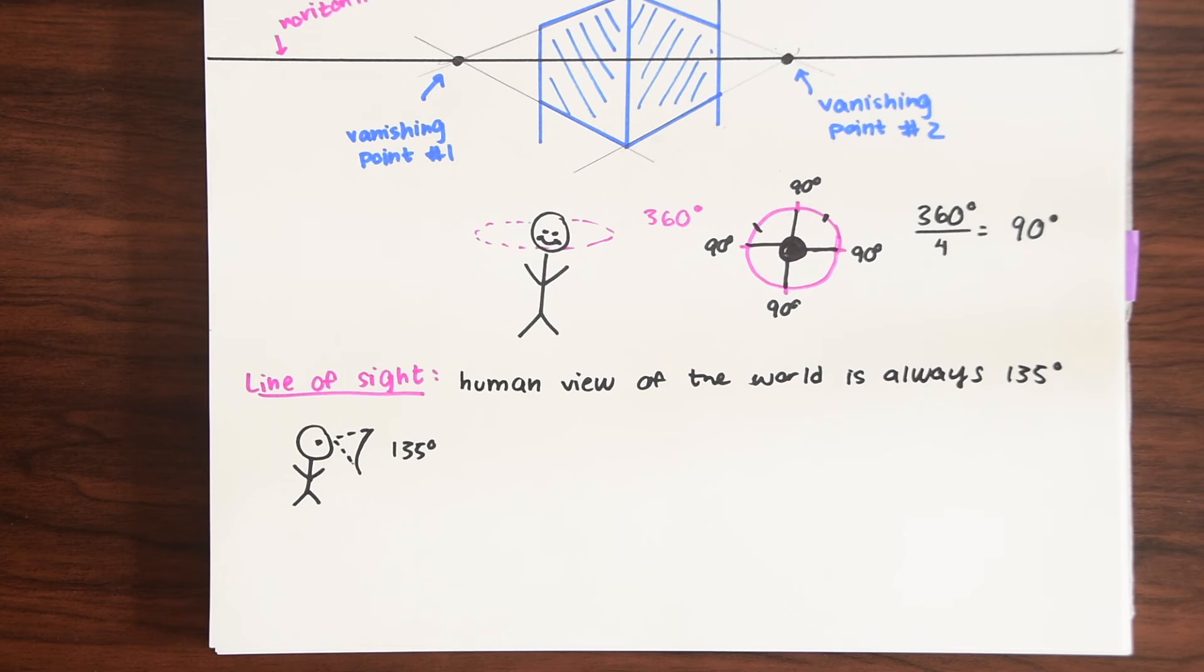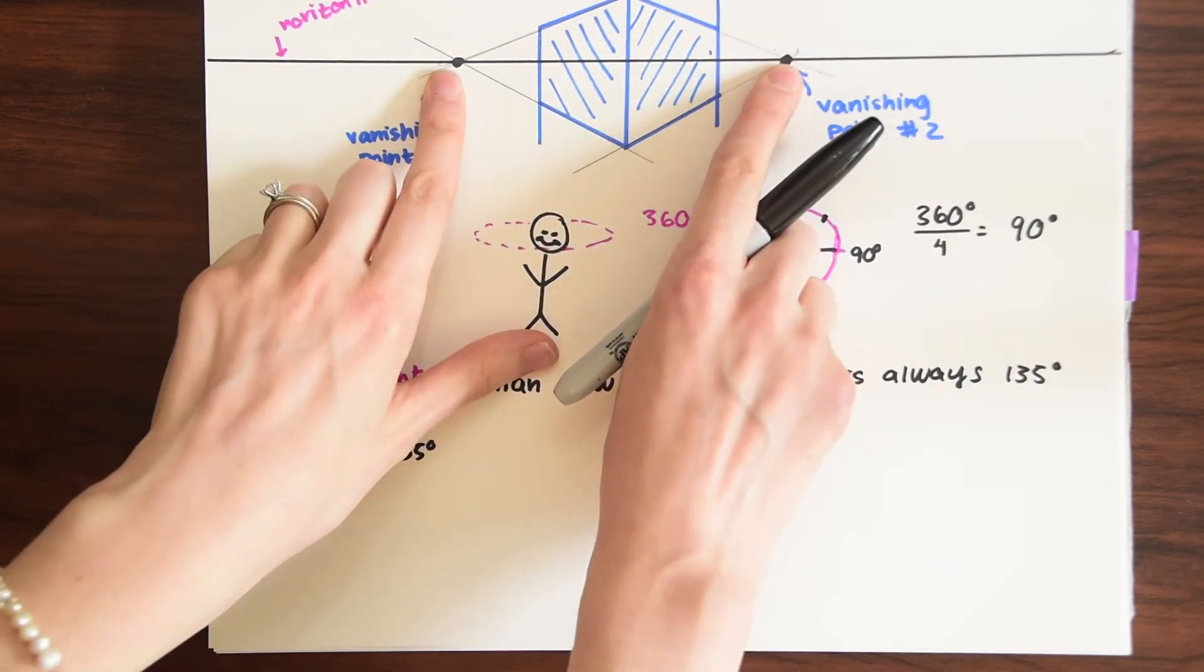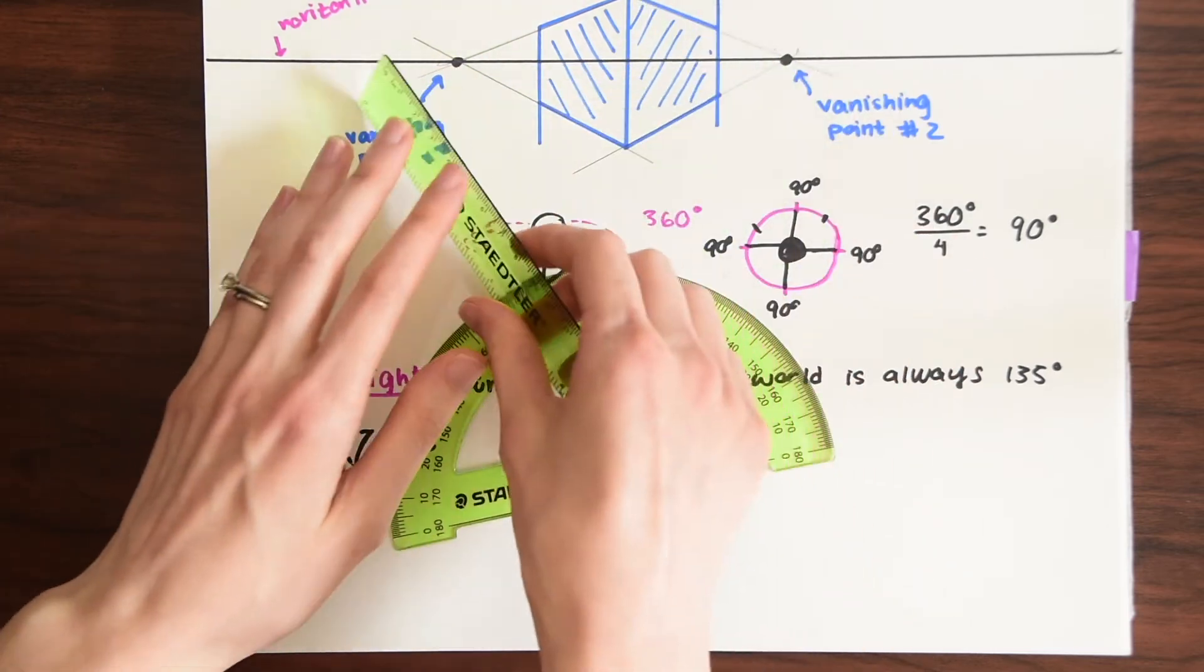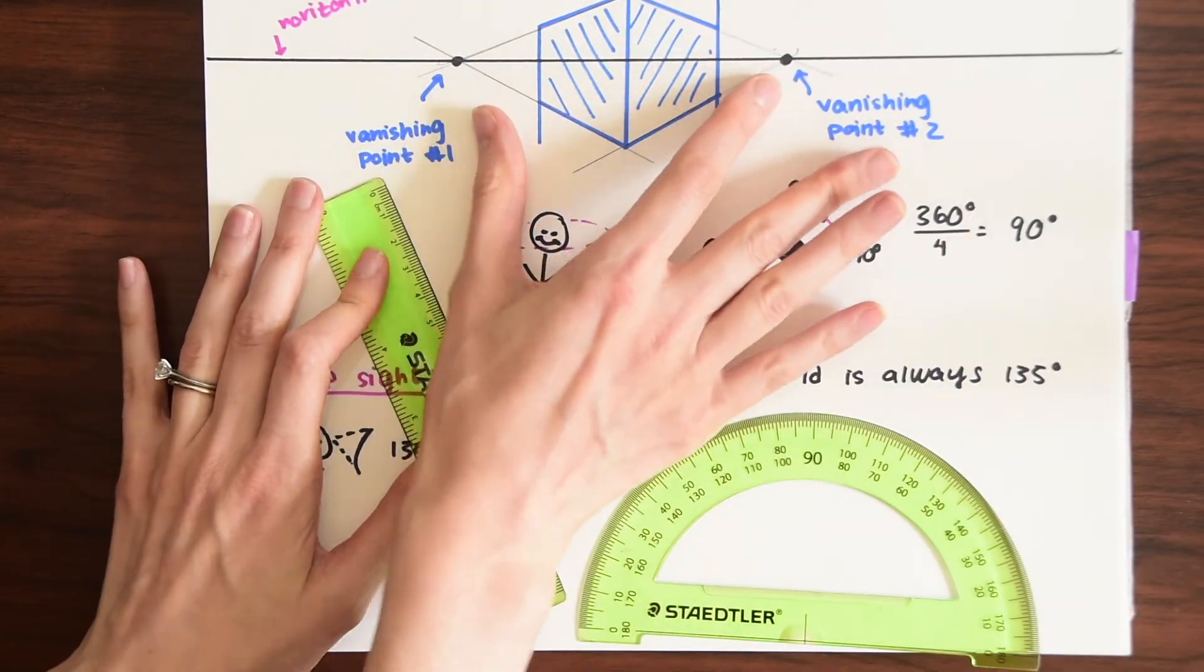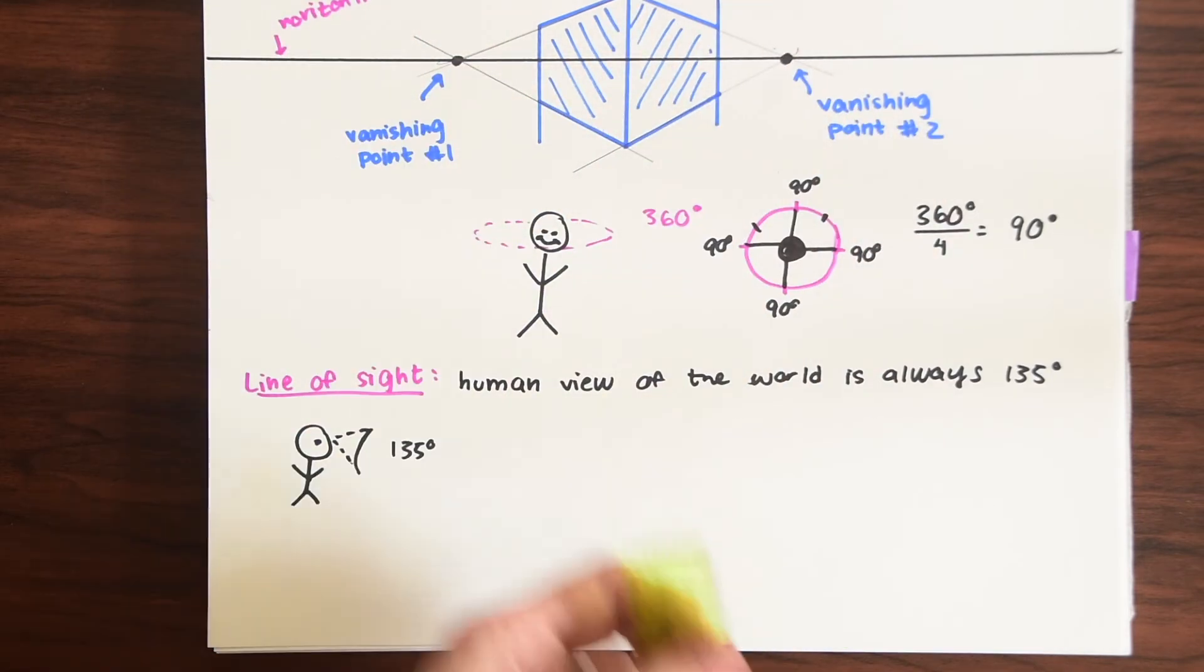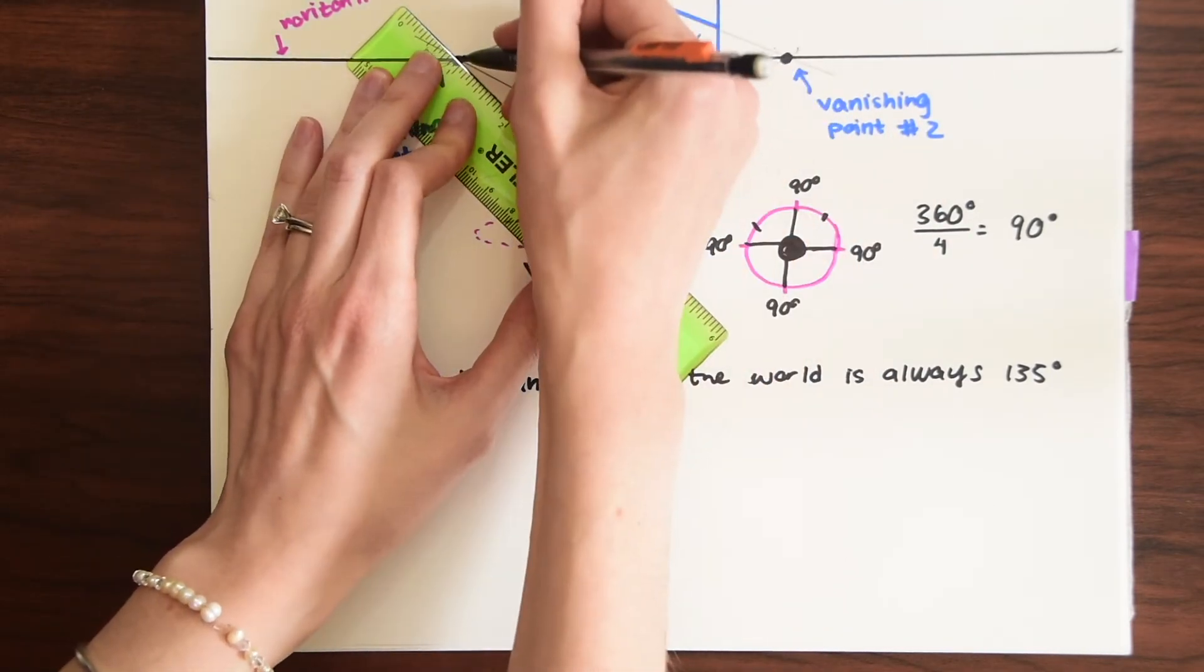So when I say the two point perspective these points are always 90 degrees apart. What I mean is that no matter where you place these they're gonna be 90 degrees apart so the angle could come all the way down here or it can be up here. It just depends on how we measure it.